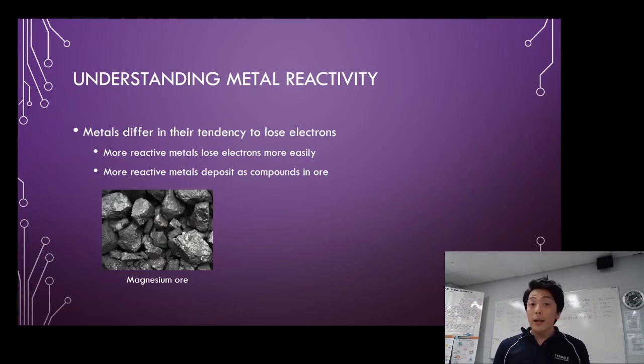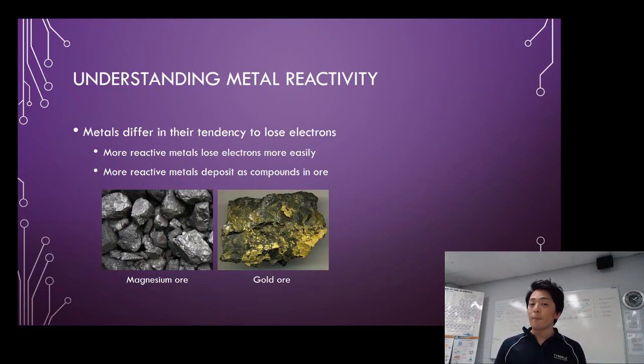If it's a reactive metal such as magnesium, you can see a picture of magnesium there. It deposits as a compound, usually magnesium sulfide or magnesium oxide, but they would appear as something like this or rock and you don't see any metal piece within it.